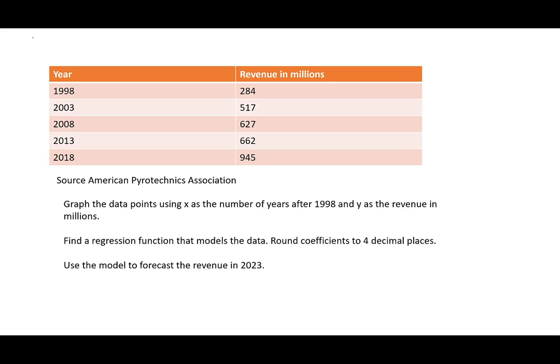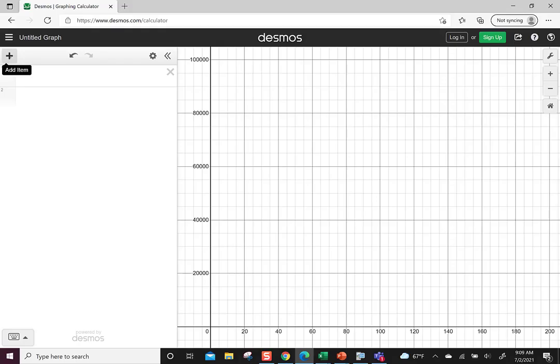In 1998, $284 million was spent on fireworks. In 2003, it was 517 million. 2008 was 627 million. 2013, consumers spent 662 million. And 2018 was 945 million. Notice I didn't put the zeros in for the millions—that complicates it. As we graph this, we don't want to put 1998, 2003, 2008. Instead, we're going to let X be the number of years after 1998 and Y will be the revenue in millions. So I'll be graphing 0 with 284, 5 with 517, 10 with 627, 15 with 662, and 20 with 945. It just makes things easier.